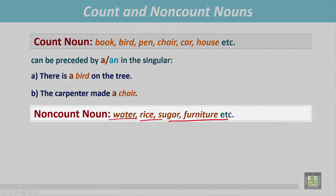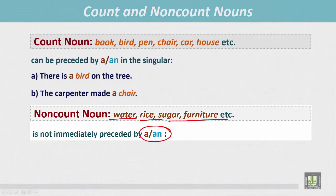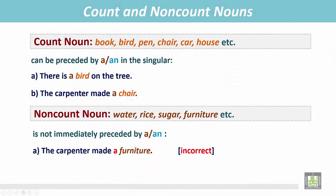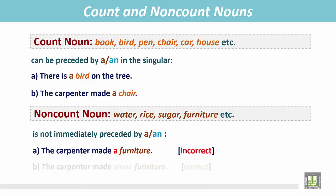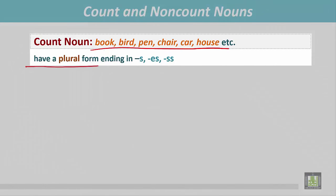Non-count nouns like water, sugar, and furniture are not preceded by 'a' or 'an.' For example, 'the carpenter made a furniture' is wrong because furniture is uncountable. The correct answer is 'the carpenter made some furniture.'